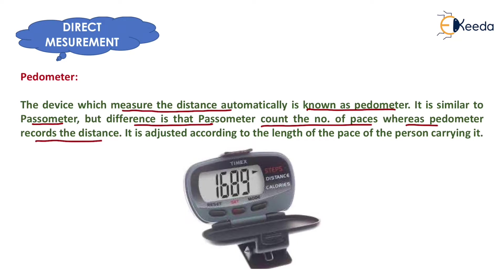This device is also similar to the passometer — it can be carried in the pocket or attached to one leg. In the pedometer, we can adjust the length of the pace according to the person carrying it. So it is a more advanced instrument compared to the passometer, because passometer measures the number of paces whereas pedometer measures distances directly.